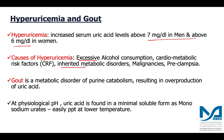Gout is a metabolic disorder of purine catabolism which results in the overproduction of uric acid. At physiological pH, uric acid is found as monosodium urate crystals, which easily precipitate at lower temperatures. Therefore, when a person suffers from gout, the deposition of monosodium urate crystals happens in the lower extremities, where the temperature is relatively low.